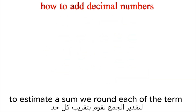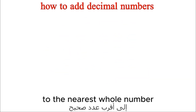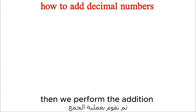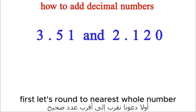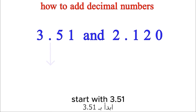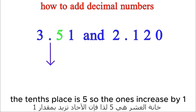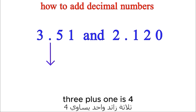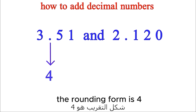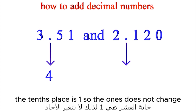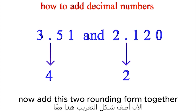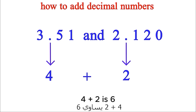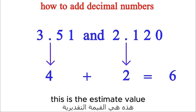Note: To estimate a sum, we round each term to the nearest whole number, then perform the addition. Example: 3.51 and 2.120. First, round 3.51 — the tenths place is 5, so the ones increase by 1: 3 plus 1 is 4. Then round 2.120 — the tenths place is 1, so the ones do not change: the rounded form is 2. Now add: 4 plus 2 is 6. This is the estimated value.